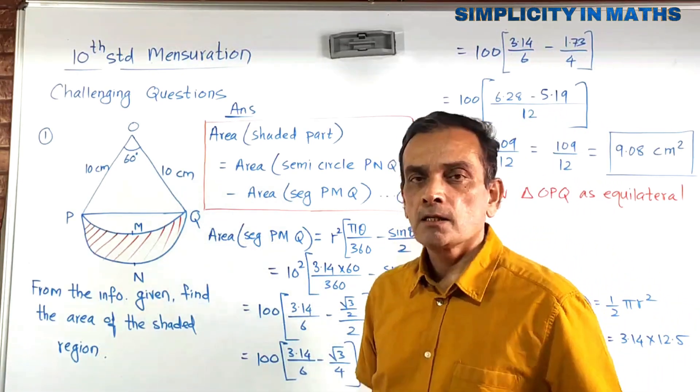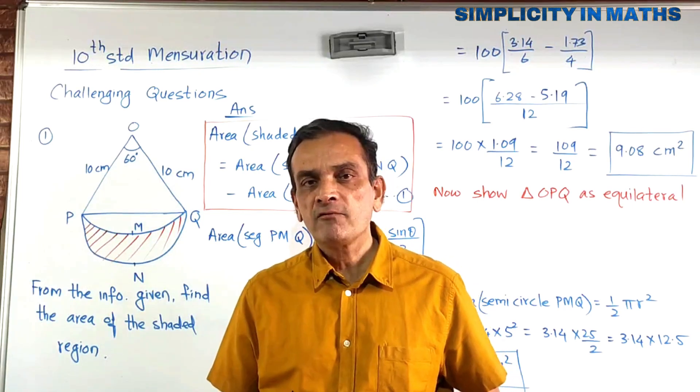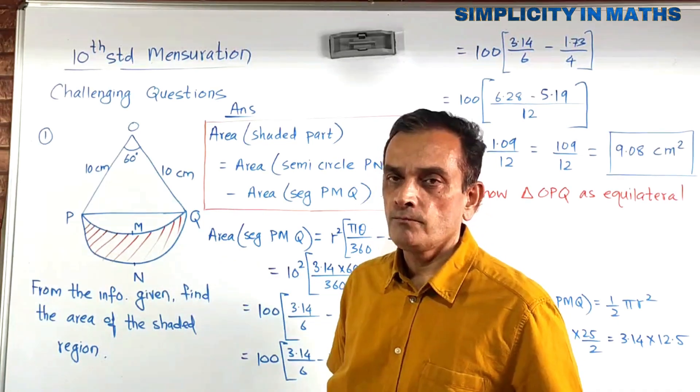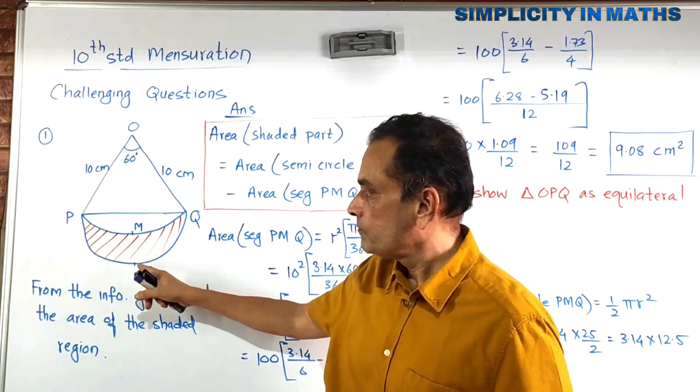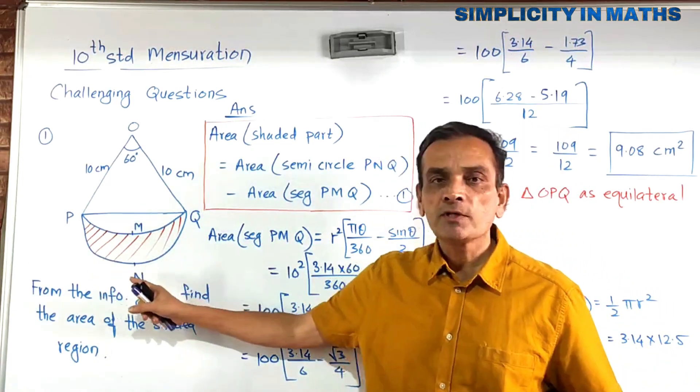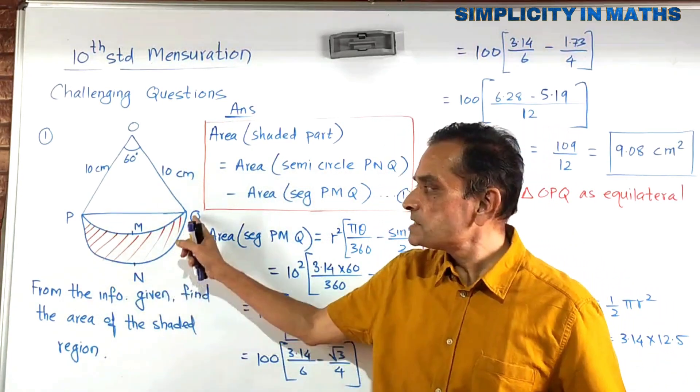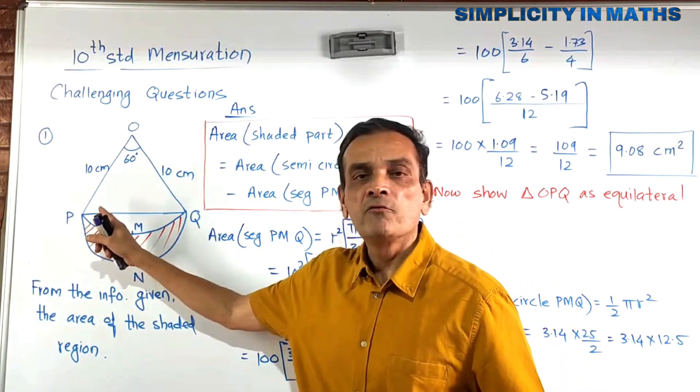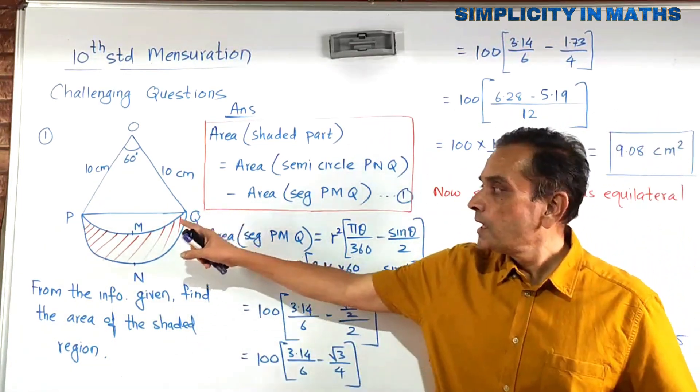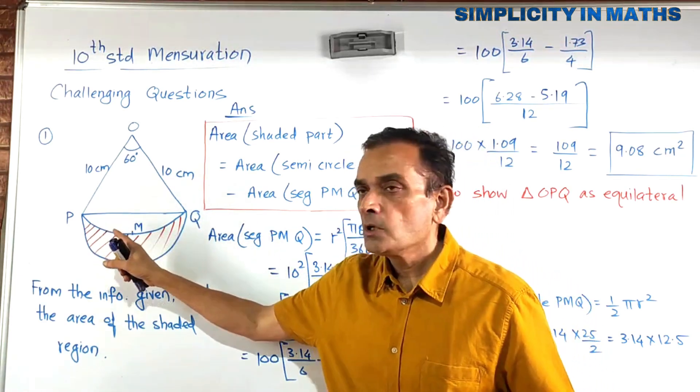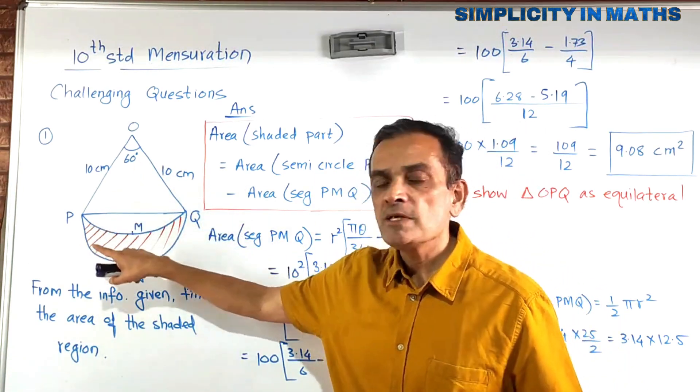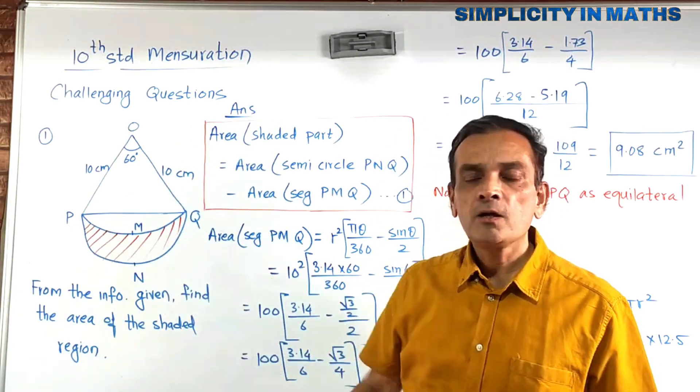So in this case, the first step in the answer itself becomes our hint. Area of the shaded part will be equal to what? Just concentrate over here. We need to find area of the semicircle. Area of the semicircle minus area of the segment will give us area of the shaded portion. Area of the shaded part will be equal to area of the semicircle minus area of segment PMQ.